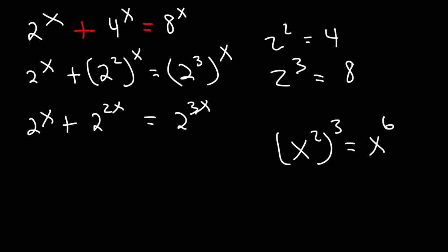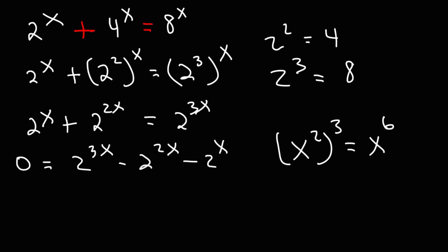Now I'm going to move everything from the left side to the right side of the equation, so I'm going to have a 0 on the left side. On the right side, I have 2 raised to the 3x minus 2 to the 2x minus 2 to the x.